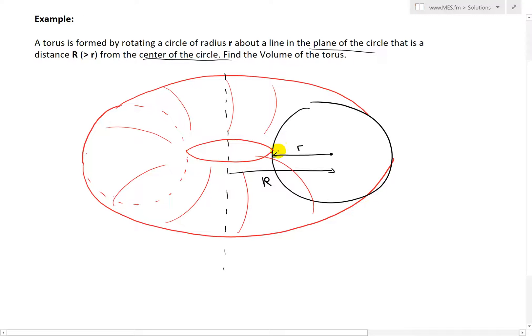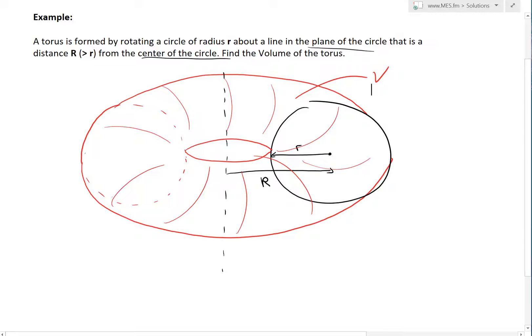So it's pretty much a donut. A torus here is just a donut. You just have a circle and you just rotate this across. So we get a 3D shape like this that has a volume V. And now we're asked to solve the volume of this torus.